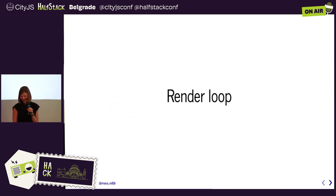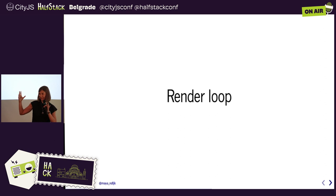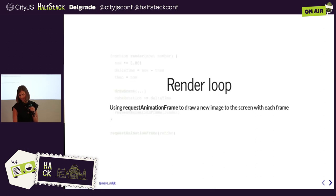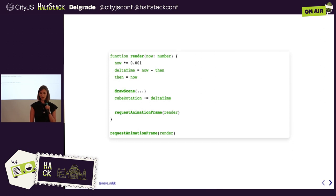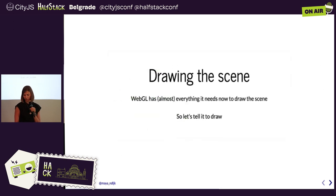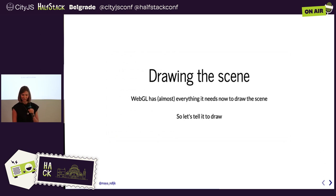Now we have everything WebGL needs to render. We use the browser API requestAnimationFrame, which calls whatever function you pass to it before the next paint. We use it to create a recursive loop that redraws our image every frame — do some stuff, make the draw call that actually draws the thing, then request to do that again.